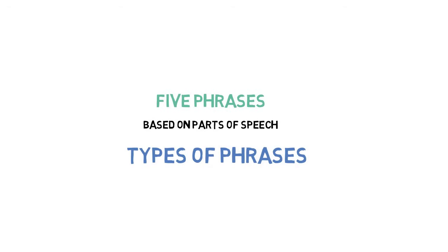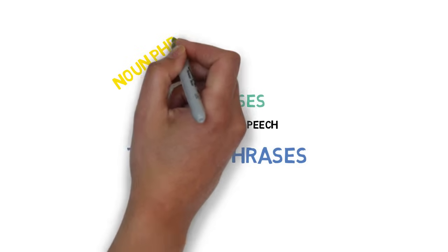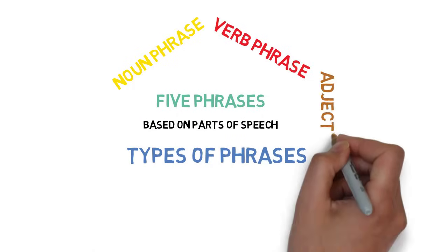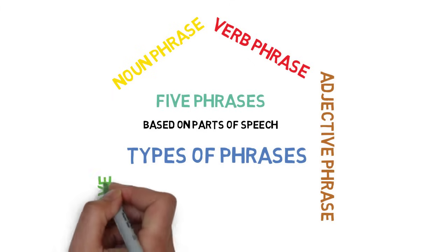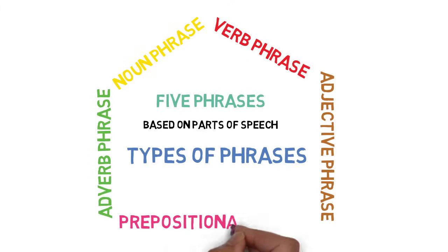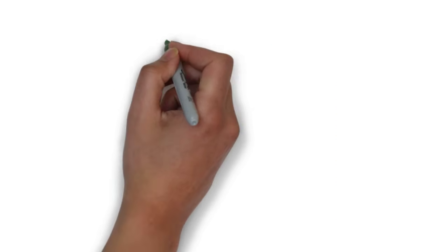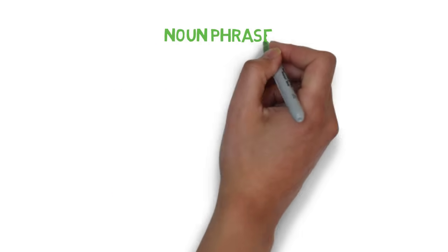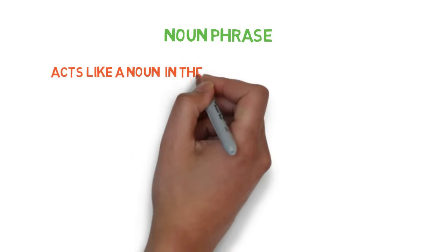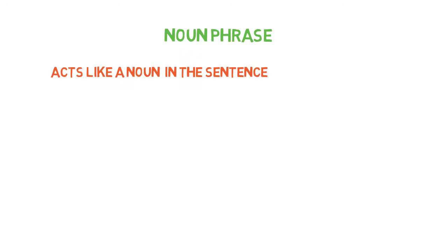These phrases are: first, noun phrase; second, verb phrase; third, adjective phrase; fourth, adverb phrase; and fifth, prepositional phrase. Now let's see each of them. Noun phrase: a phrase that acts like a noun in a sentence is called a noun phrase.